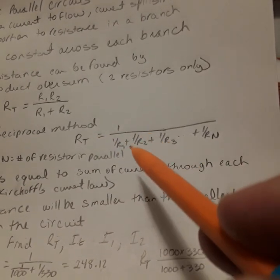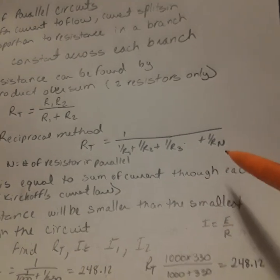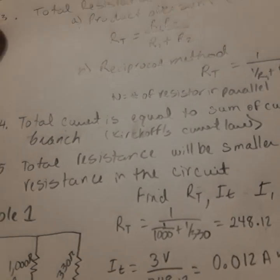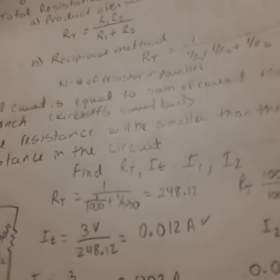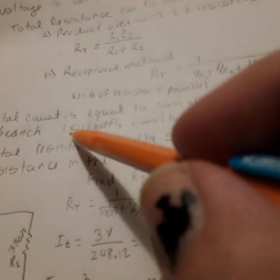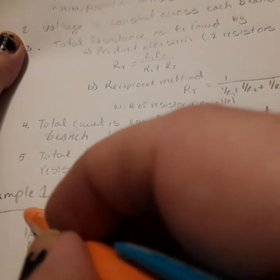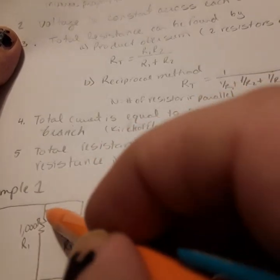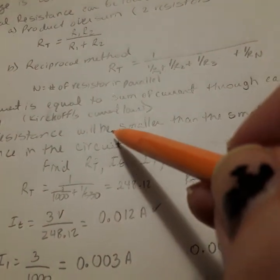The reciprocal method is for more than two resistors. RT = 1 / (1/R1 + 1/R2 + 1/R3...) until we get to whatever number of resistors we have in parallel. The total current is equal to the sum of current through each branch. This is called Kirchhoff's Current Law. The total current equals I1 plus I2.